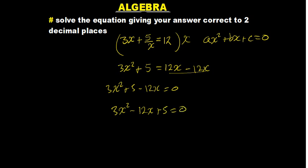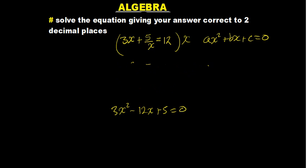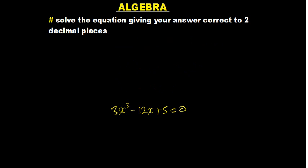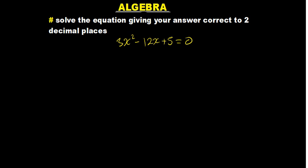That is basically what we need to work with. It's much easier using that compared to what we had at first. So we have 3x squared minus 12x plus 5 equals 0. Looking at the question, we need to leave the answer correct to two decimal places, which tells me I'm dealing with decimals, so I need to use the quadratic formula.